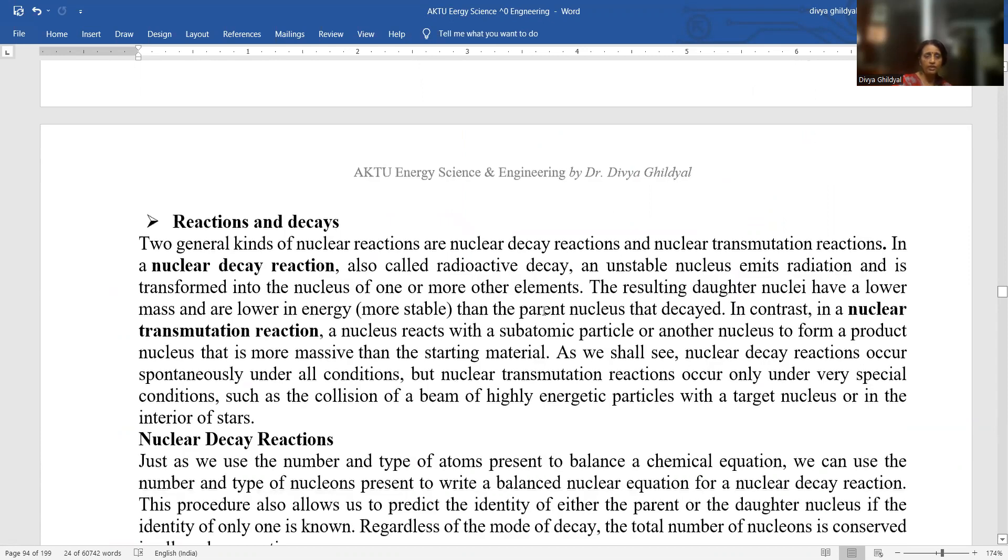Two general kinds of nuclear reactions are the nuclear decay reaction, also called radioactive decay. An unstable nucleus emits radiations and is transformed into the nucleus of one or more other elements. The resulting daughter nuclei have a lower mass and are lower in energy than the parent nucleus that decayed. In contrast, in the nuclear transmutation reaction, a nucleus reacts with a subatomic particle or another nucleus to form a product nucleus.